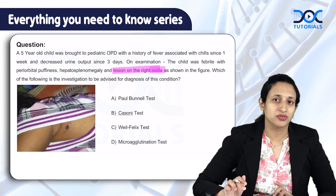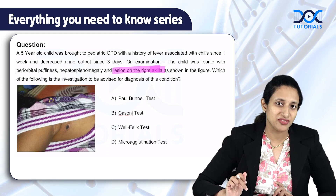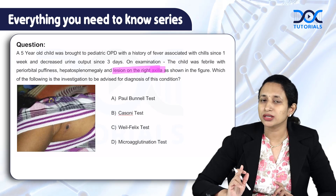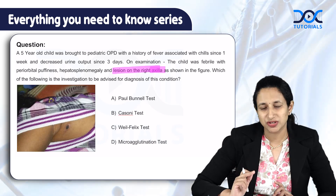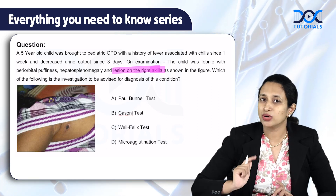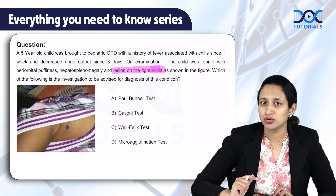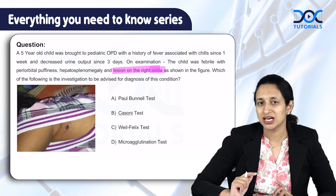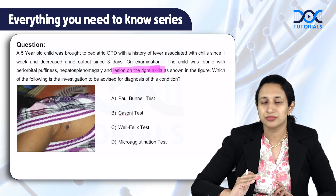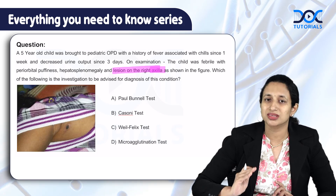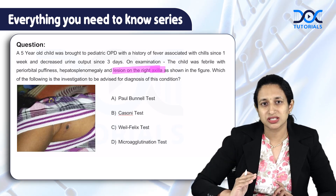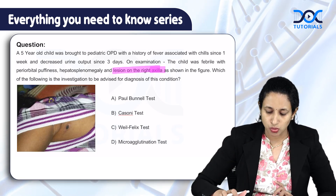What do you have to remember about the Weil-Felix test? The Weil-Felix test is not a confirmatory test — it is a non-specific test. It is a tube agglutination test in which serial dilutions of patient serum are treated with the non-motile strains of Proteus.